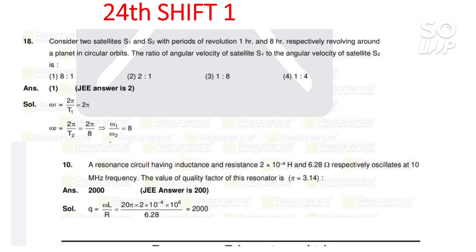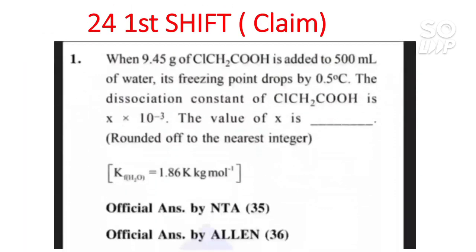The second question for 24th first shift is an integer-type question. The correct answer is 2000 but NTA provided 200, so the answer key will be changed. One important thing: after the challenge period is over, a final answer key will be released and that will be used for the result. So re-estimate your marks after the final answer key is released to get complete information about your marks for the February attempt. There is one more question for this shift where NTA says 35 but Allen Career Institute says 36 — you should claim it.